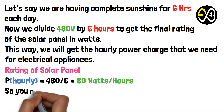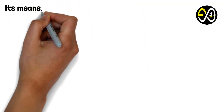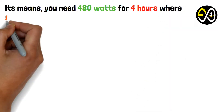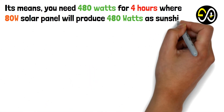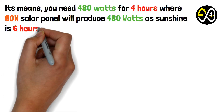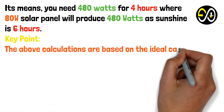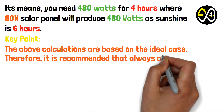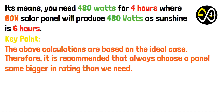So you need an 80-watt solar panel. This means you need 480 watt-hours for four hours, and an 80-watt solar panel will produce 480 watt-hours given 6 hours of sunshine. Key point: the above calculations are based on the ideal case, so it is recommended to always choose a panel with a slightly higher rating than needed.